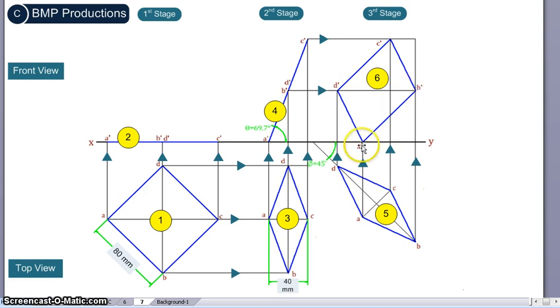That's how we get the points A', B', C', and D'. Once we have that, we connect, and that gives us the front view in the third stage. That's the process to draw the projection of planes.